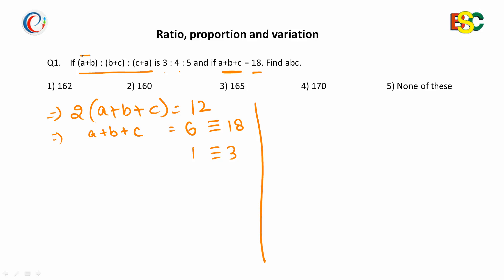Now see this equation a+b equals 3. If you subtract this from a+b+c equals 6, you will obtain the value of c, that will be 6 minus 3 equals 3. On subtracting b+c equals 4 from the same equation, you will get the value of a as 2. And on subtracting c+a equals 5, you will get the value of b as 1.